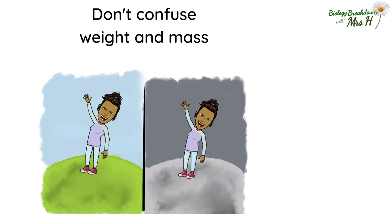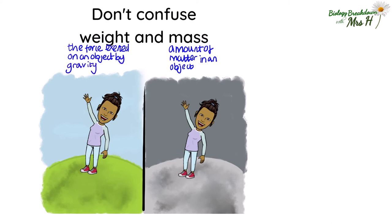This one is more for physics. The confusion between mass and weight is not surprising when outside of a science classroom these words are used interchangeably. However, we must get them correct. Mass is the amount of matter. Weight is the force exerted on an object by gravity. Mass is measured in grams or kilograms, and weight in newtons. You will have the same mass on Earth as on the moon, but because there's less gravity on the moon you would weigh less. In biology, we just use mass and never mention weight.